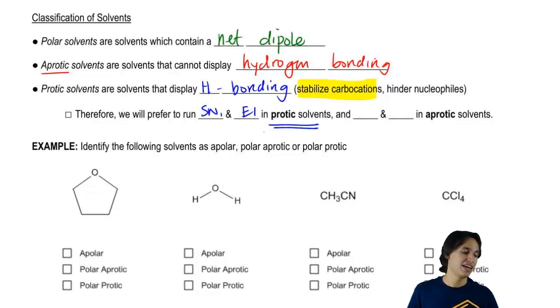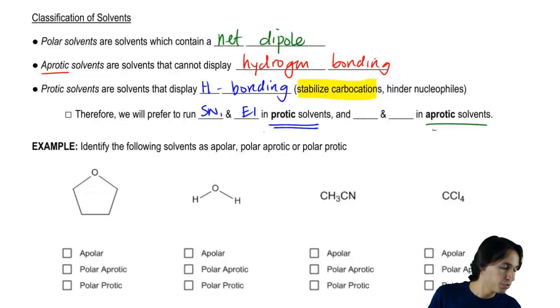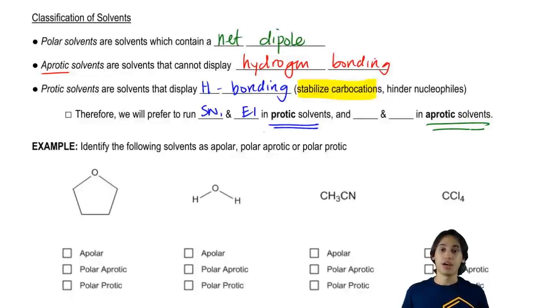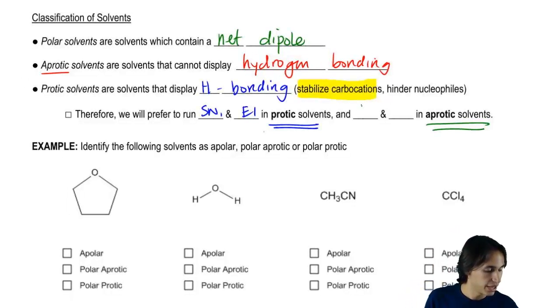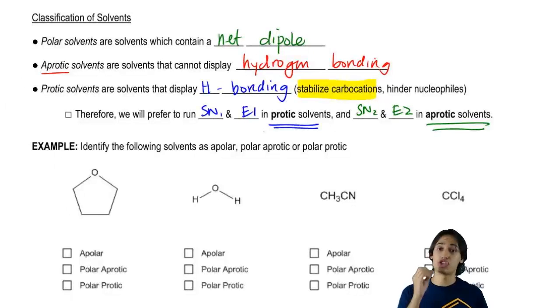And then that means that in an aprotic solvent, what would be a good mechanism to run? And that would be SN2 and E2 because these are mechanisms that start off – remember, the very first step is a strong nucleophile attack something.